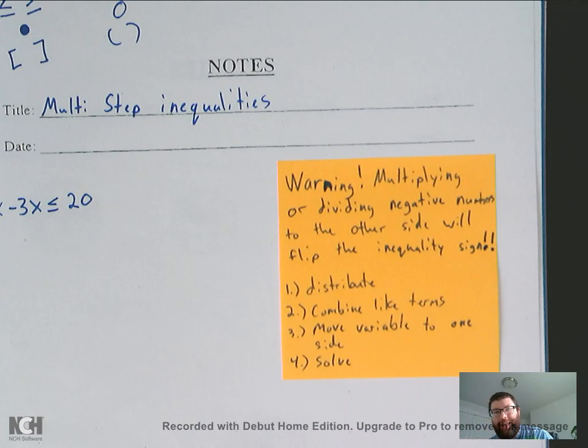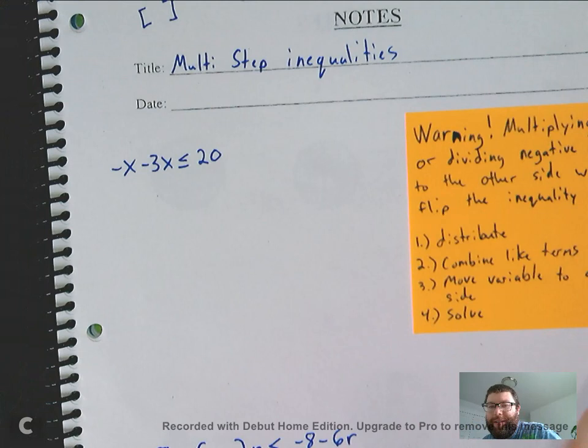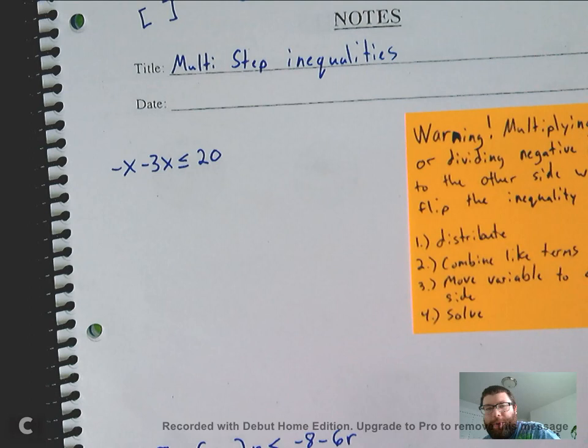That's the one thing you always have to watch out for when you're doing inequalities. And really, you should be at that point now where when you divide by a negative with inequalities, you get that warning in your head that kind of tells you, oh, I need to do something. I need to flip that sign.